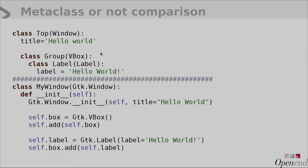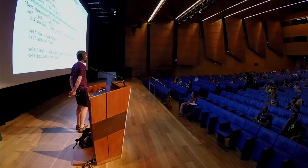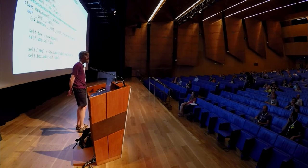Just for comparison again: the top is the declarative syntax that we will look at how we implemented, and the bottom is what it would look like if we hadn't. I'll just pause here to see if you're following along. Are there any questions on what a metaclass is, or should we continue to look at the code?